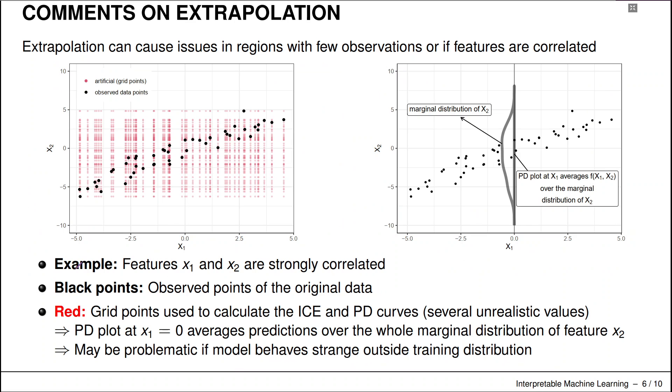And if we do that, we produce points on that regular grid here, and then we will also produce points which lie in areas where we have never observed any values. And we now compute predictions on those with our model, where it has never seen any data points in that area. And then we average these predictions over the whole marginal distribution. And that might be problematic if our model behaves strangely outside of that training distribution.